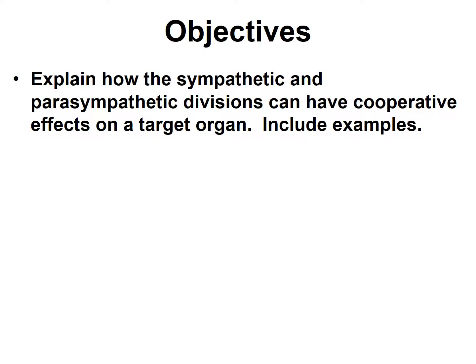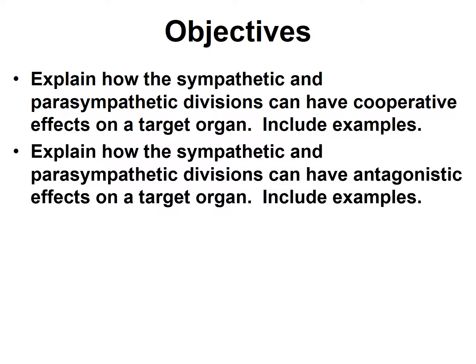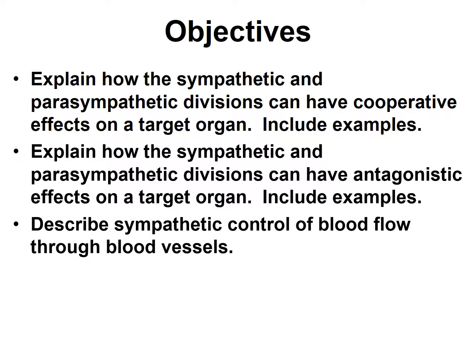The objectives of this screencast are as follows: explain how the sympathetic and parasympathetic divisions can have cooperative effects on a target organ and include examples; explain how they can have antagonistic effects on a target organ and include examples; and lastly, describe sympathetic control of blood flow through blood vessels.